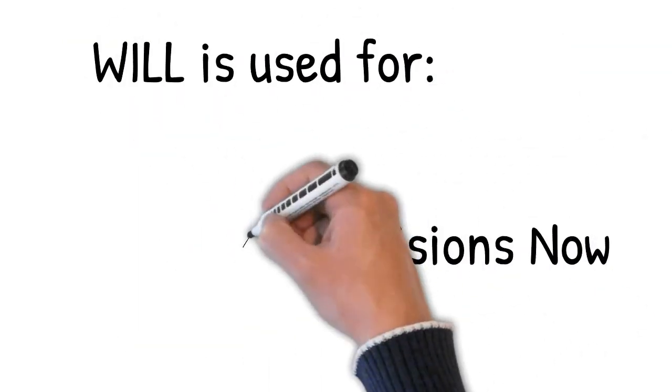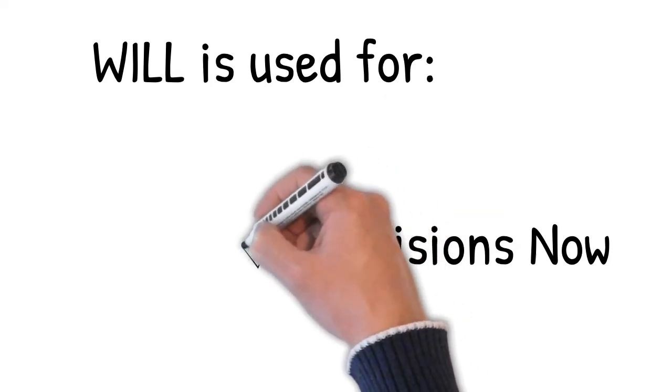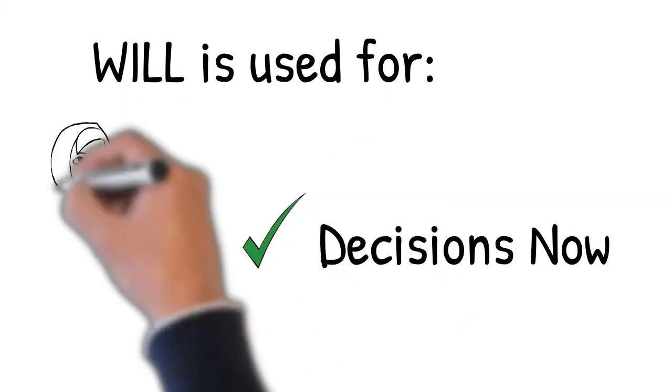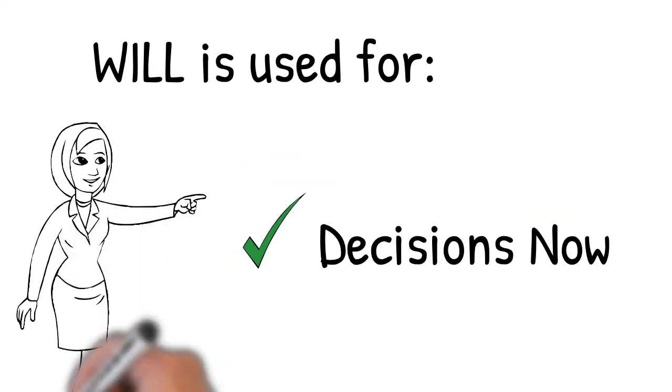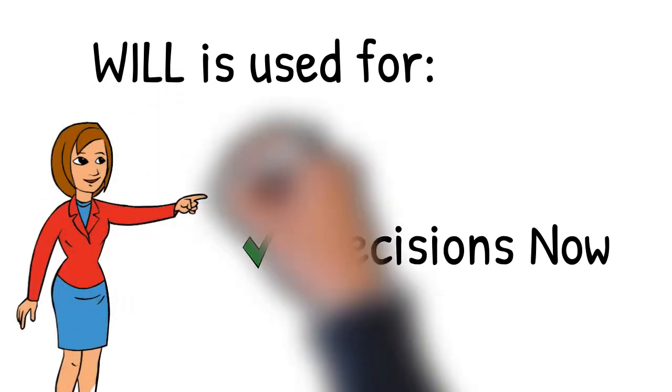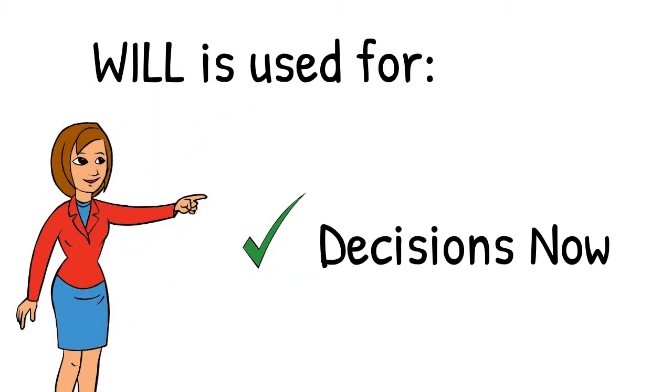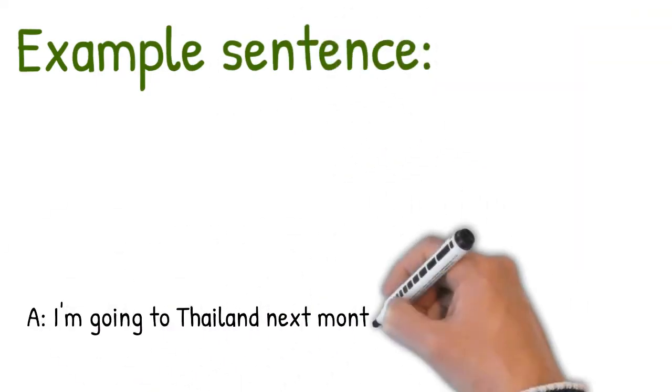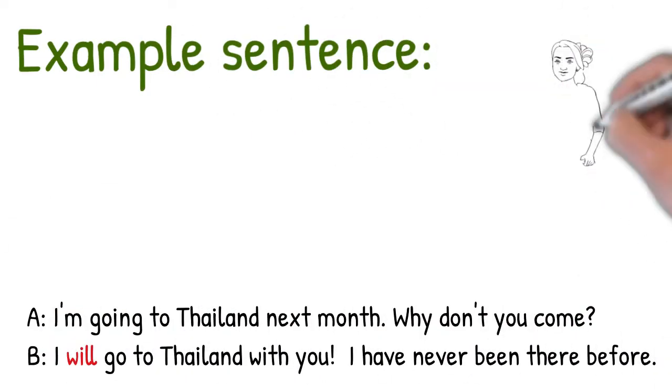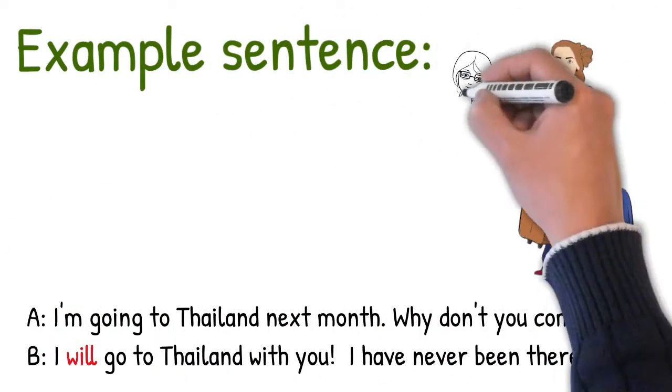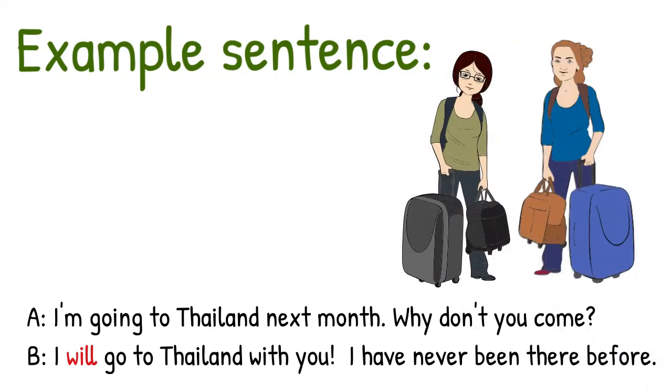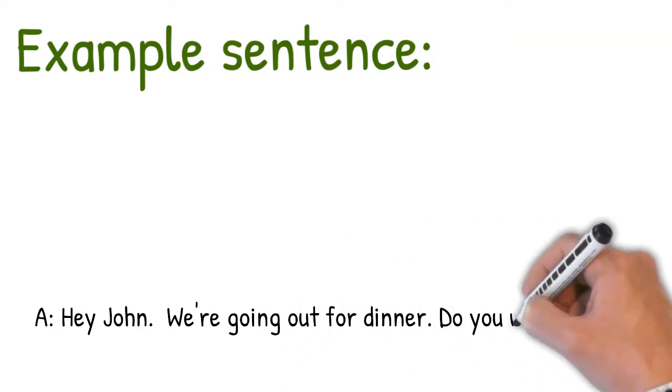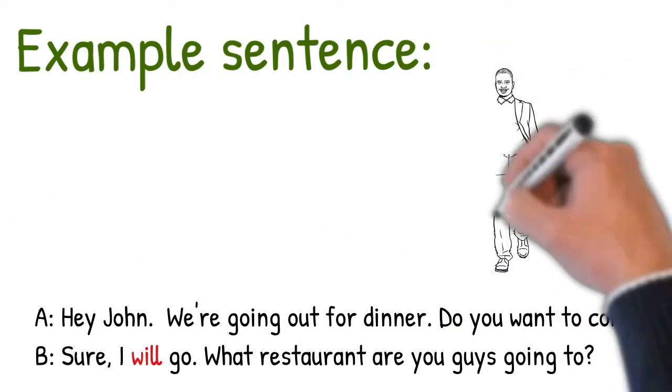And the last category, will is used for decisions now. They're also called instant decisions. That's when you decide at the time of speaking, not before, because that's different. Let's look at an example sentence. I'm going to Thailand next month. Do you want to come? I'll go to Thailand with you. I've never been before. Yeah, let's do it. Here's another example of making a decision at the time of speaking.